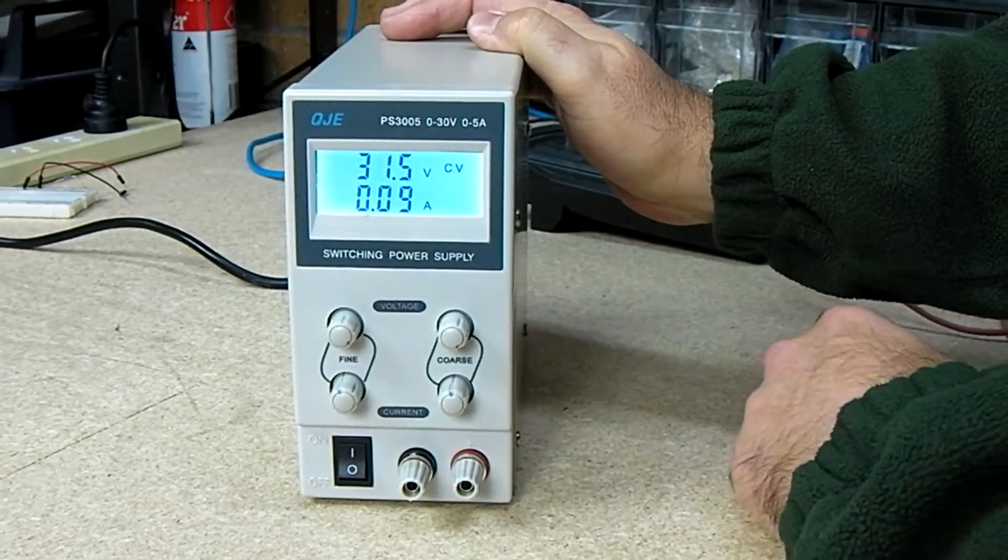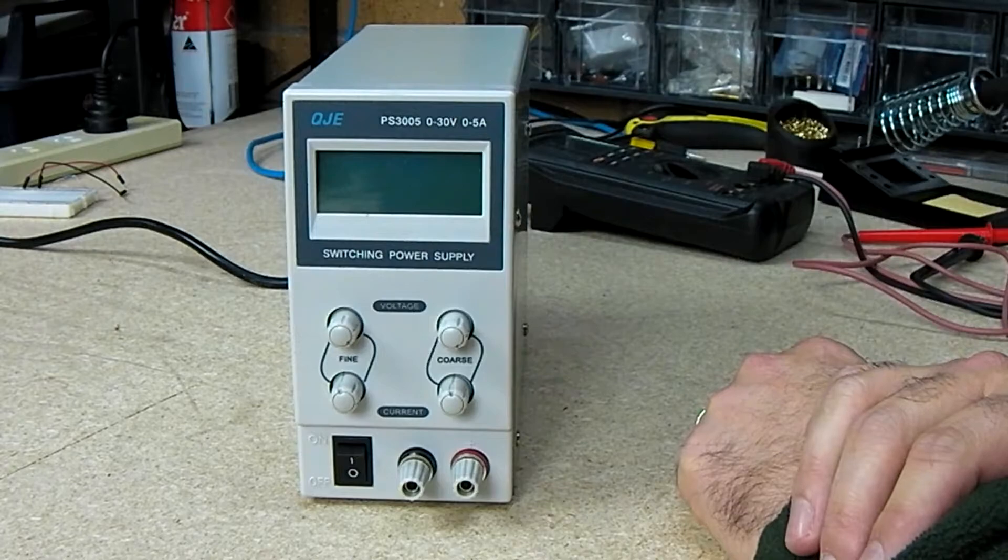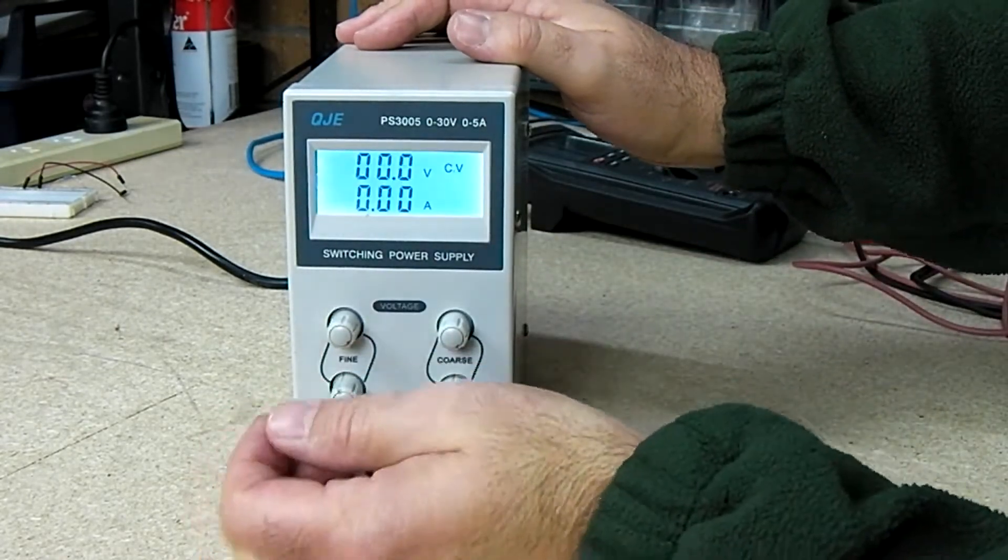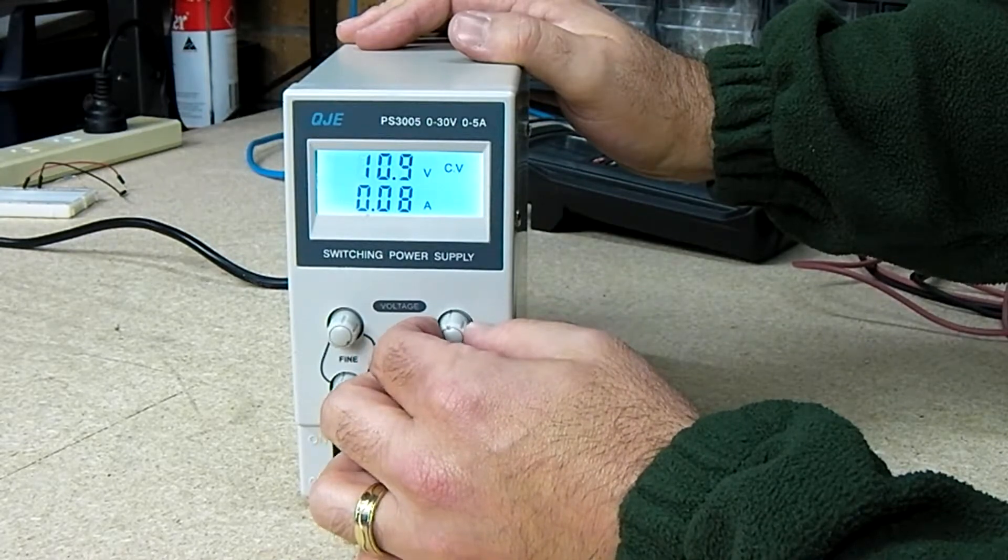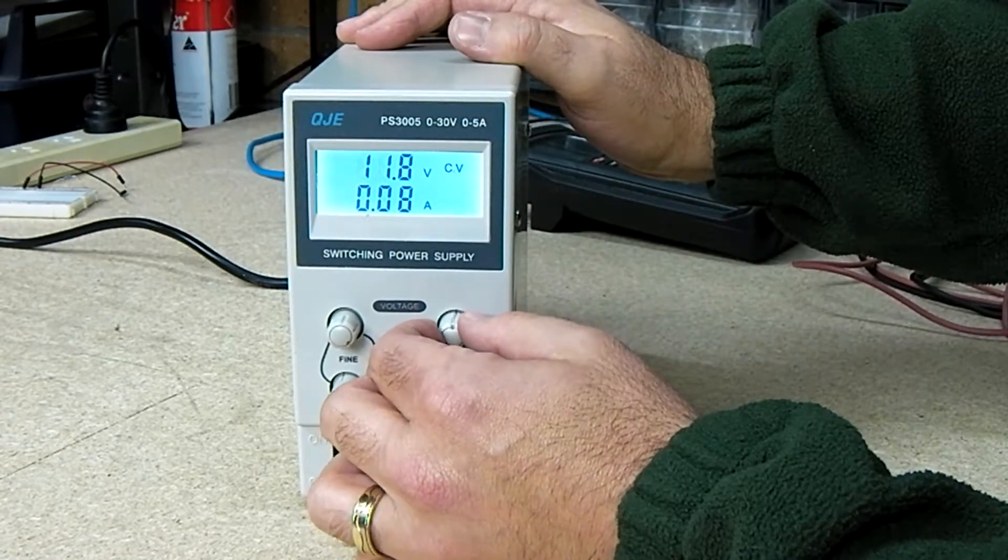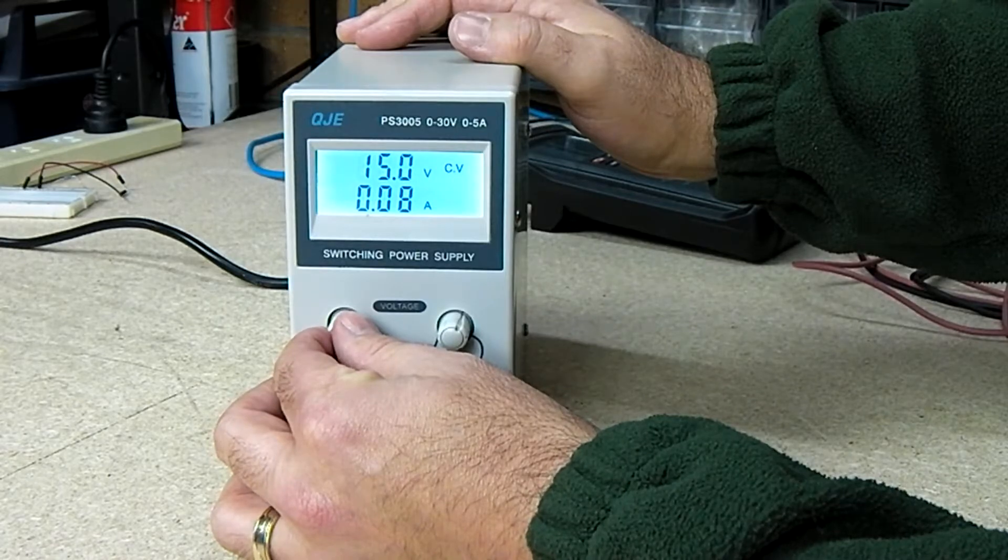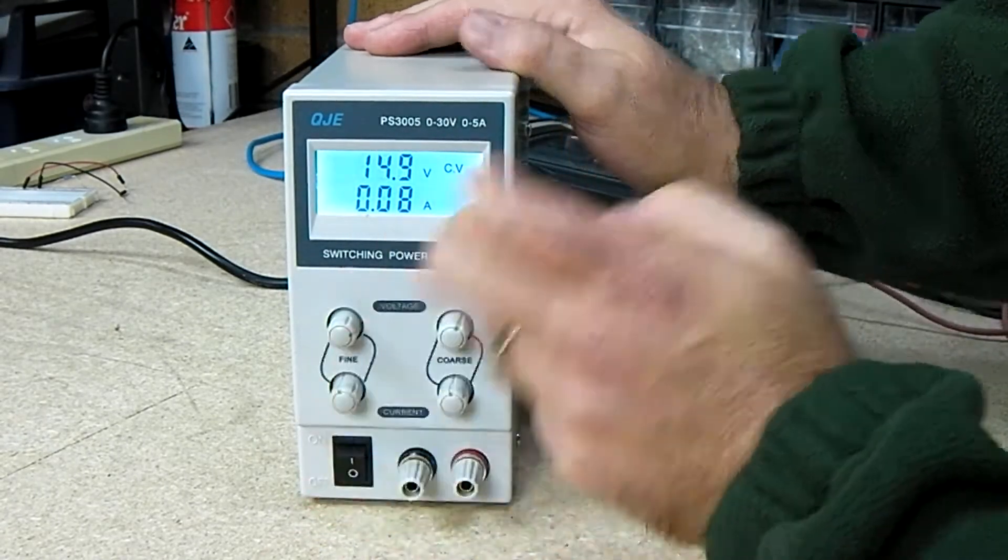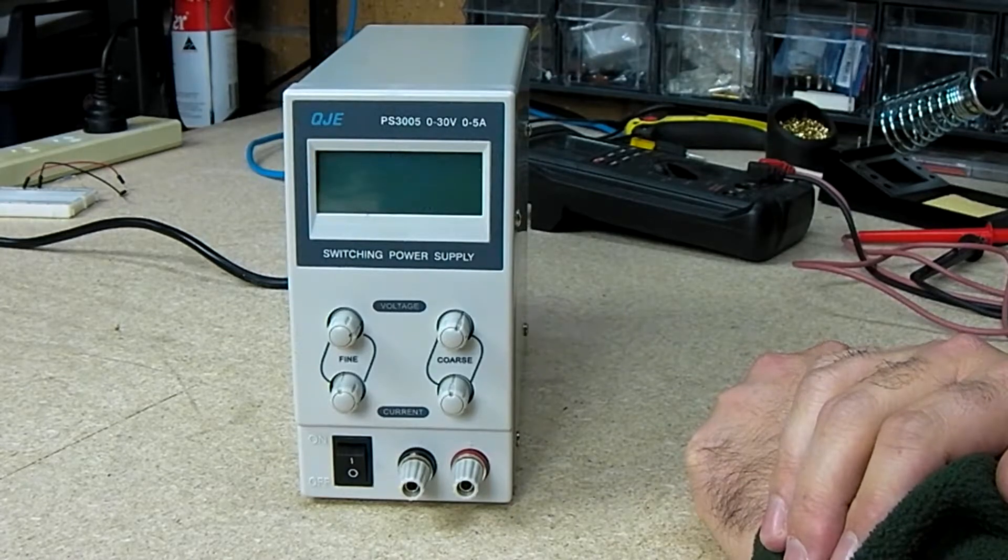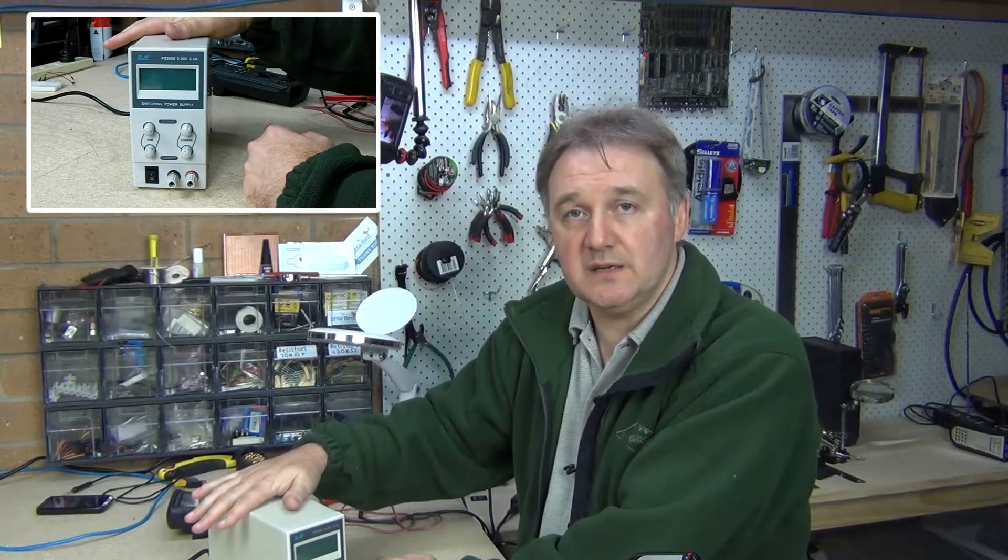One interesting thing to note about the capacitor: turn the device off and you'll notice the display went off in around a second. I'll turn it back on and change the voltage down to 15 volts—half of the potential 32 volts the unit is capable of delivering. Turn the power off. There's your one second, there's your two seconds. That is definitely the capacitor inside doing that. Depending on what the amperage and voltage you've got set, the capacitor takes a different amount of time to discharge.